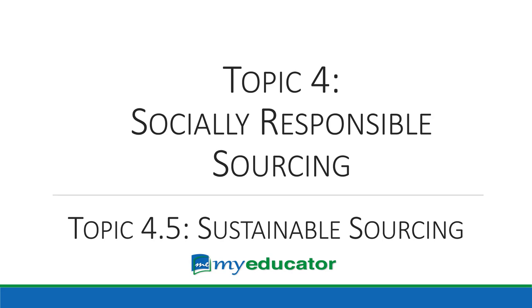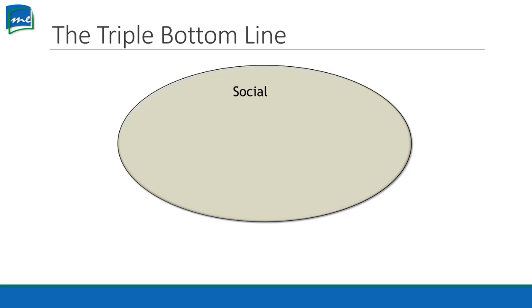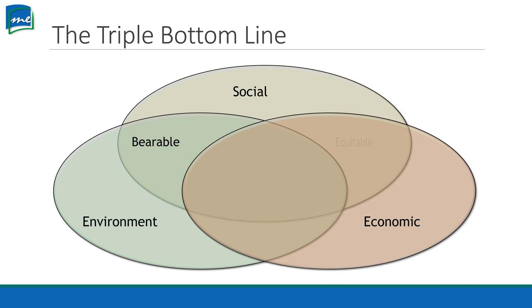Sustainable sourcing. Finally we're talking about the other aspects that many of you are familiar with when we say socially responsible, which is the sustainable part. We have what's called the triple bottom line, comprised of the social aspect, the environment aspect, and the economic aspect. When we combine all these together, we'll have socially responsible sourcing.